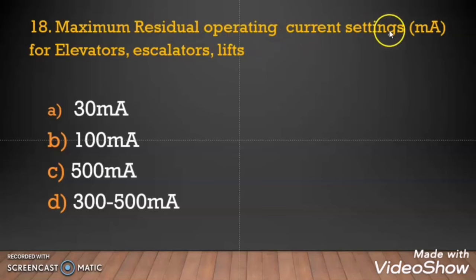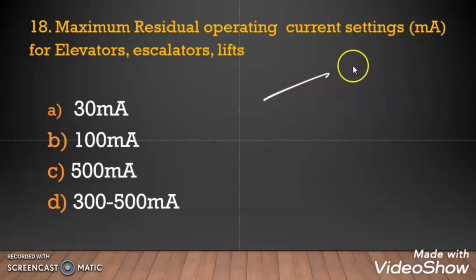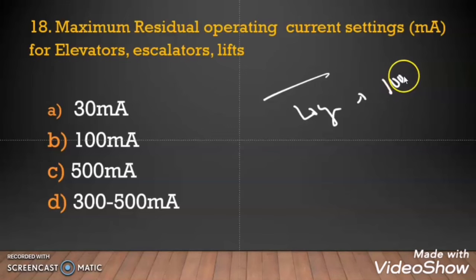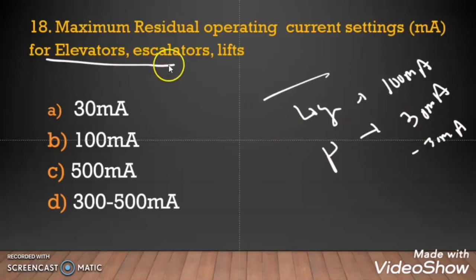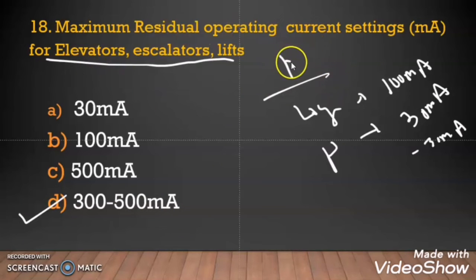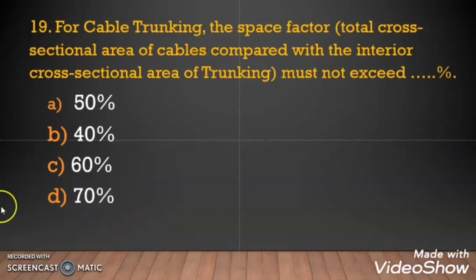Question 18: The minimum residual operating current setting for elevator, escalator, and lift. As per ADDC regulation, different loads have different residual operating current settings. For lighting, the maximum is 100 mA; for power loads like fridges, washing machines, and water heaters, the maximum is 30 mA. For elevator, escalator, and lift, the correct answer is 300 to 500 mA. You need an RCCB with a sensitivity rating of 300 to 500 mA for these loads.